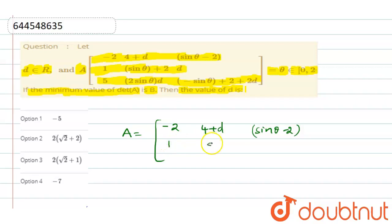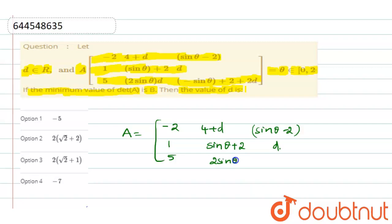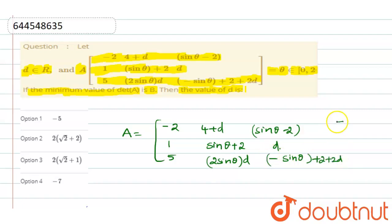The second row is: 1, sine θ plus 2, D. The third row is: 5, 2 sine θ, D, minus sine θ plus 2 plus 2D.